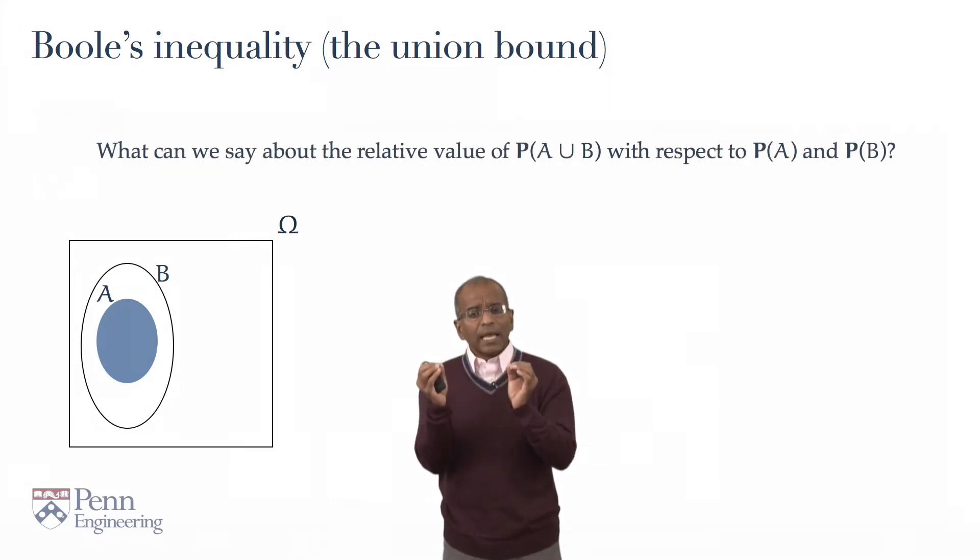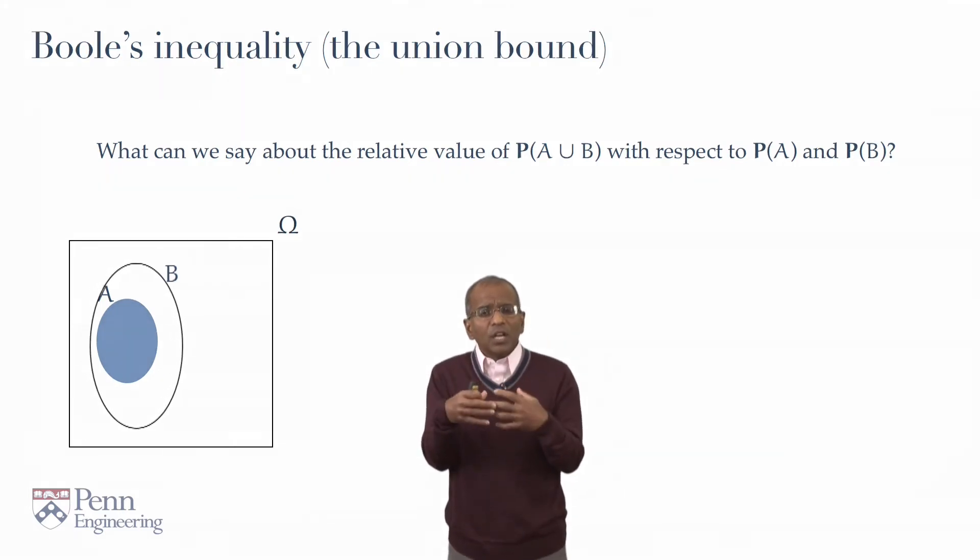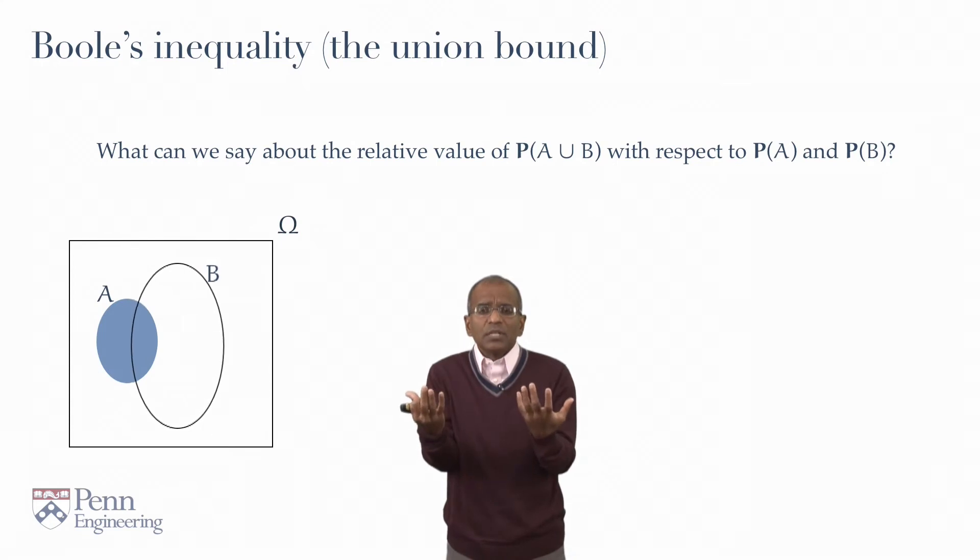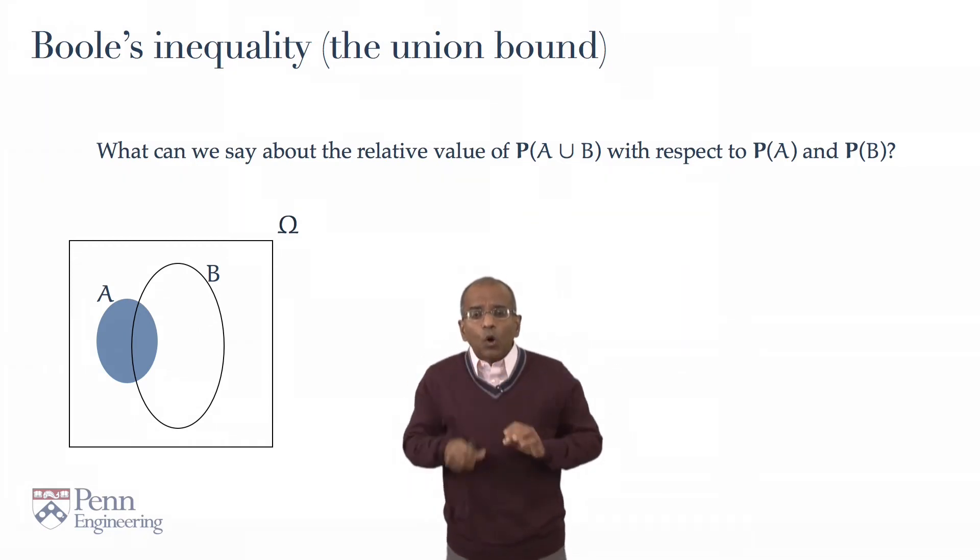And the idea is, what can you say about the relative value of the probability of A union B with respect to the probabilities of A and B? So in this setting, if we have a Venn diagram, A and B are generic sets, and so they don't necessarily have any inclusion relationship. So you might have some kind of display like this, where A and B live happily in their own spheres of influence, and they have some overlap.